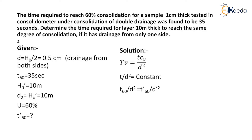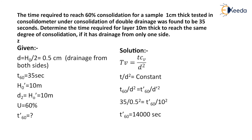Therefore: T60 / D₁² = T'60 / D₂². Substituting values: 35 / (0.5)² = T'60 / (10)². Hence the value of T'60 equals 14,000 seconds. Therefore, the time required for 60% consolidation of the 10 meter thick layer with one-side drainage is 14,000 seconds.